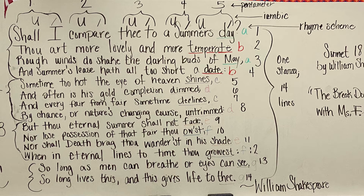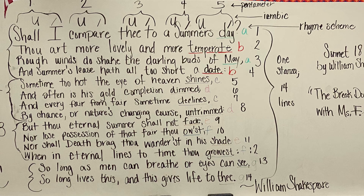Sonnet 18 by William Shakespeare. 'Shall I compare thee to a summer's day? Thou art more lovely and more temperate. Rough winds do shake the darling buds of May, and summer's lease hath all too short a date. Sometime too hot the eye of heaven shines, and often is his gold complexion dimmed. And every fair from fair sometimes declines, by chance or nature's changing course untrimmed. But thy eternal summer shall not fade, nor lose possession of that fair thou owest. Nor shall death brag thou wanderest in his shade, when in eternal lines to time thou growest. So long as men can breathe or eyes can see, so long lives this, and this gives life to thee.'